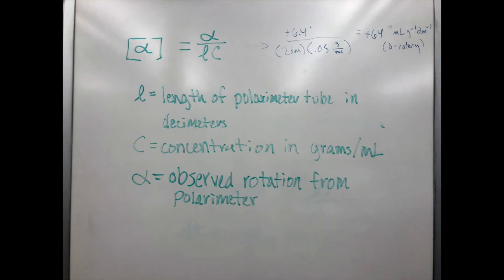The literature value for sucrose is 66.37 degrees when using yellow light at a temperature of 20 degrees celsius. Good luck with your polarimetry labs. It'll be all right.